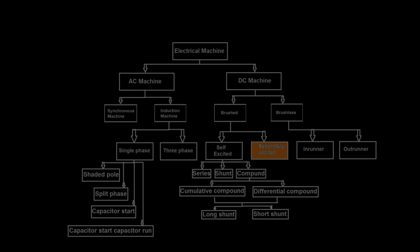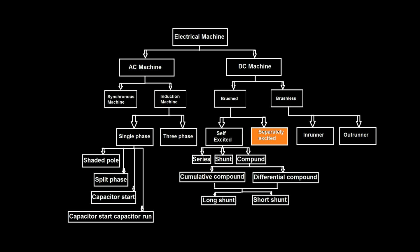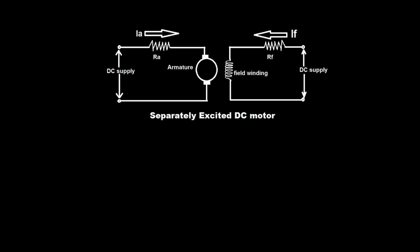Separately excited DC motor. Electrical machines are divided into two types: AC machine and DC machine. DC machine is further classified as brushed motor and brushless motor. Brushed motor is divided into two types: self-excited and separately excited. This is the separately excited DC motor.